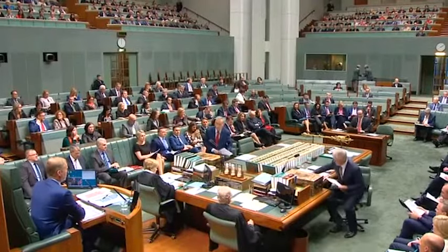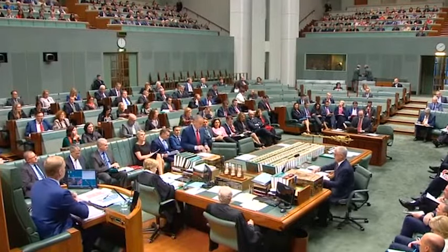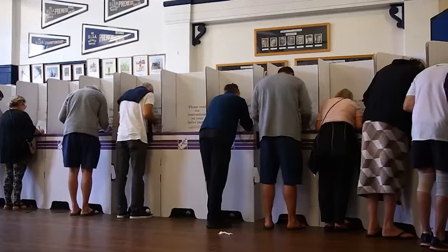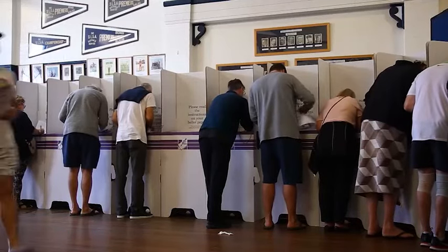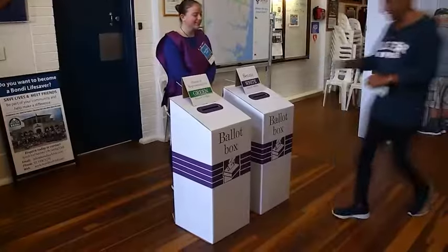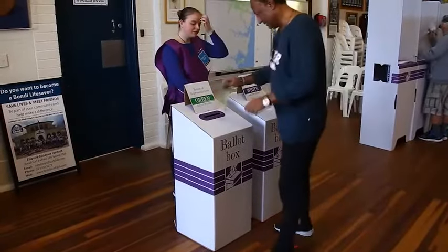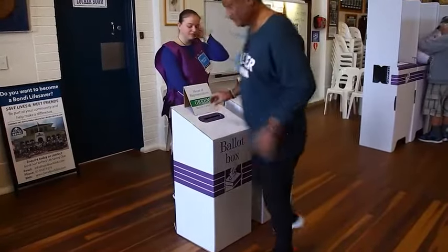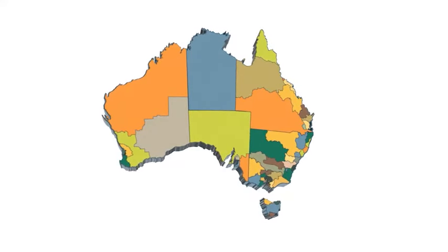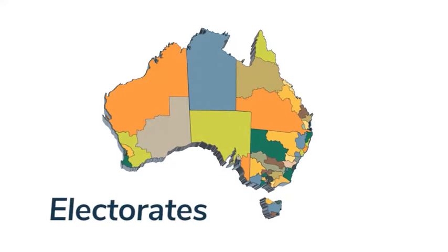This is the House of Representatives. At election time, the people of Australia vote in their local regions to elect one person to represent them in the House of Representatives. These regions are called electorates.